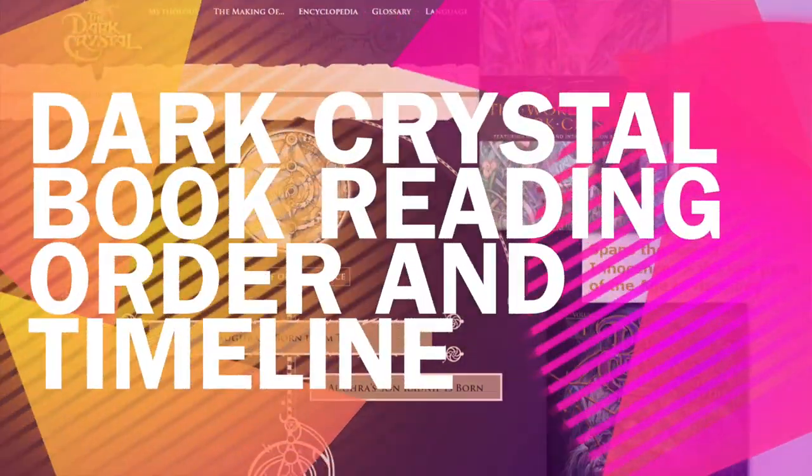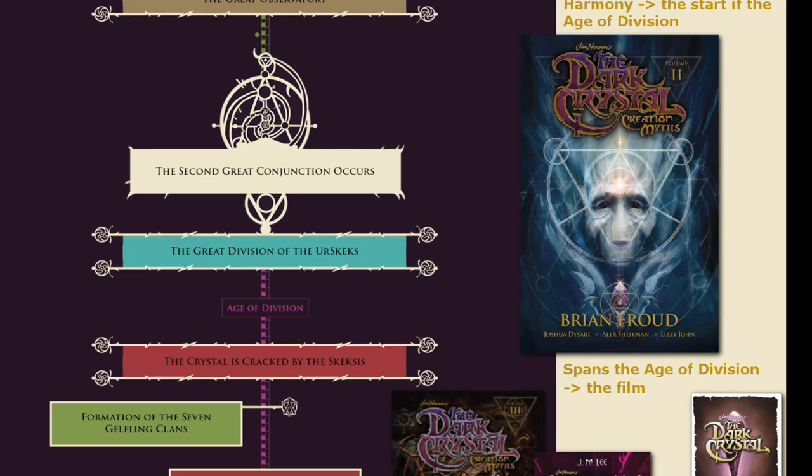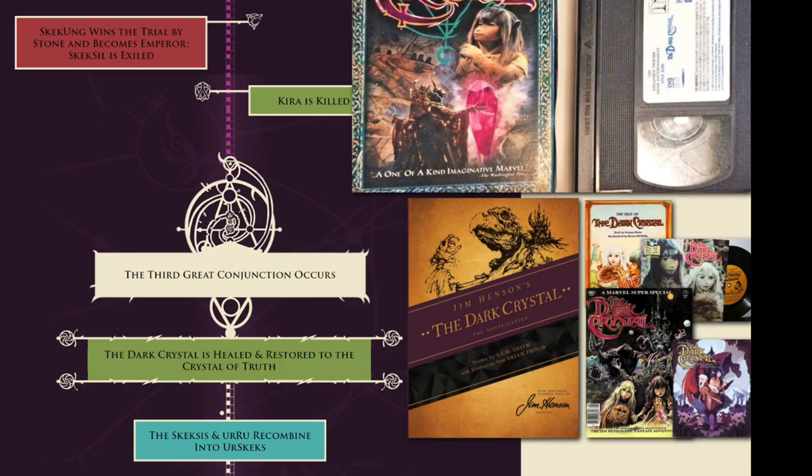With books like Song of the Dark Crystal, Tides of the Dark Crystal, Shadow of the Dark Crystal, Legends of the Dark Crystal Volumes 1 and 2, The Dark Crystal Tales, Power of the Dark Crystal, and Beneath the Dark Crystal — what's there to be confused about with reading order?